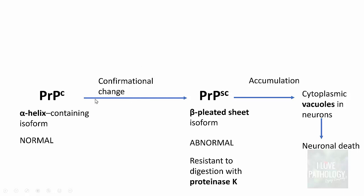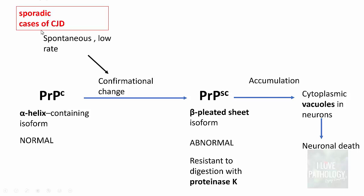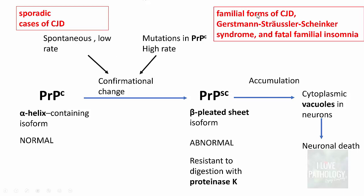What are the causes of this conformational change? The conformational change can be spontaneous and occurs at a low rate — the common example being sporadic cases of Creutzfeldt-Jakob disease. Mutations in the PRPC gene lead to a high rate of conversion of PRPC to PRPSC, and examples of mutation-related forms include familial Creutzfeldt-Jakob disease, Gerstmann-Sträussler-Scheinker syndrome, and fatal familial insomnia.